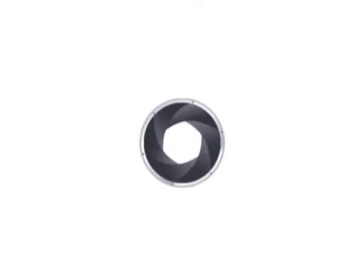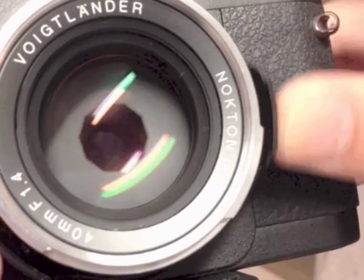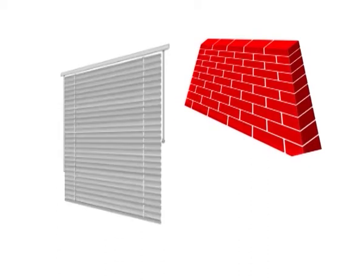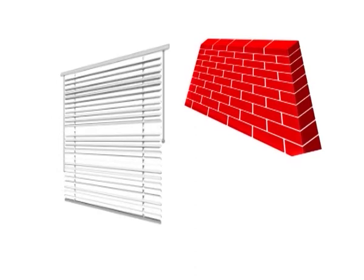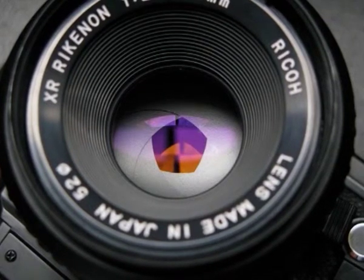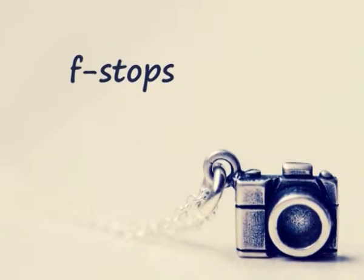Aperture is a circular opening in the lens that can be adjusted in various different sizes. It decides how much light passes through the lens and touches the digital sensor of the camera. Think of a window blind as your aperture and the wall against the window as the sensor — when we open the blinds, the wall gets brighter as more light comes through. In the same way, opening the aperture of the lens provides more light to the sensor. The opening of the lens or aperture is expressed in f-stops.